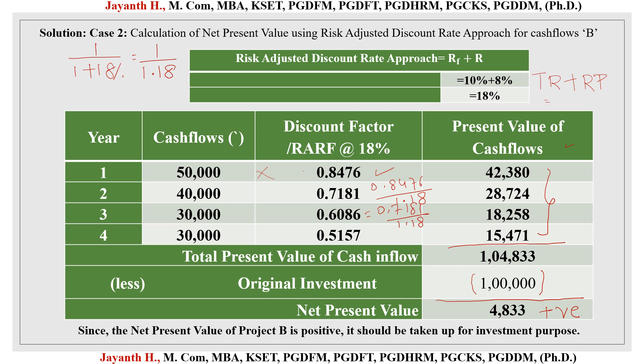Comparing the two projects, project A has a negative NPV while project B has a positive NPV of 4,833. Since organizations prefer positive NPV investments, project B should be selected for investment. Thank you — we will look at more videos in the coming classes.